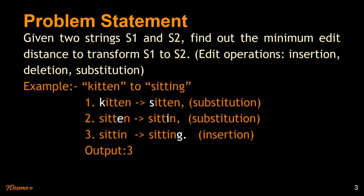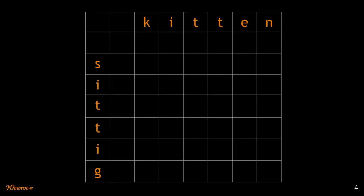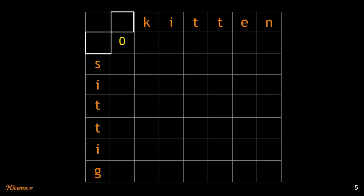This is also called minimum edit distance. The approach we use to achieve this is dynamic programming. In this solution, we have a table where we represent the columns using the letters of the first string and the rows using the letters of the second string. The empty cells here represent empty strings. Assuming we are trying to convert 'kitten' into an empty string, if we convert empty string to empty string, zero operations are required.